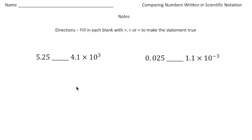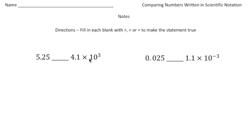Alright, so let's take a look at this first problem. What we want to know is: fill in the blank with either greater than, less than, or equals to make the statement true. So we have to figure out which is larger — 5.25 or 5,2500 — versus 4.1 times 10 to the 3rd power.